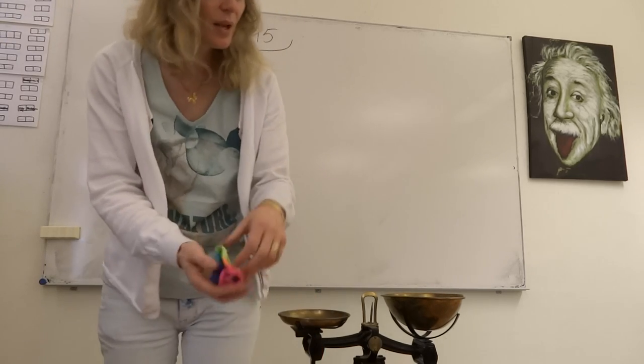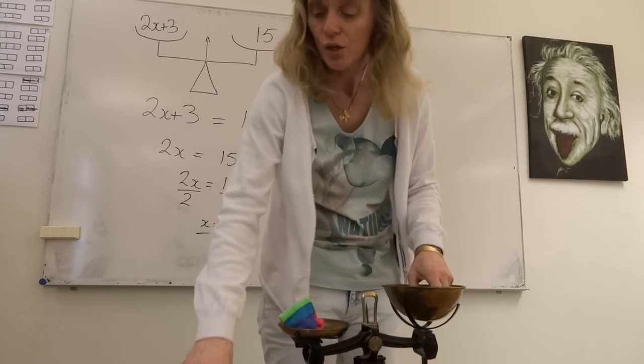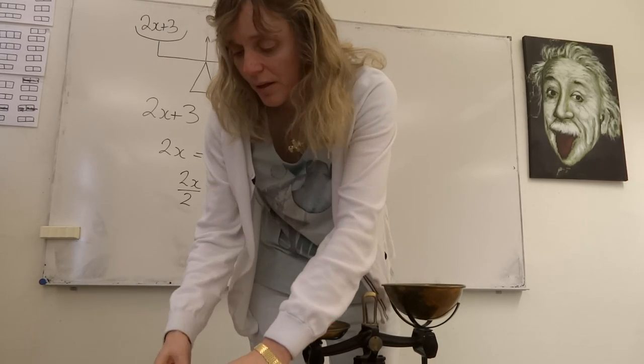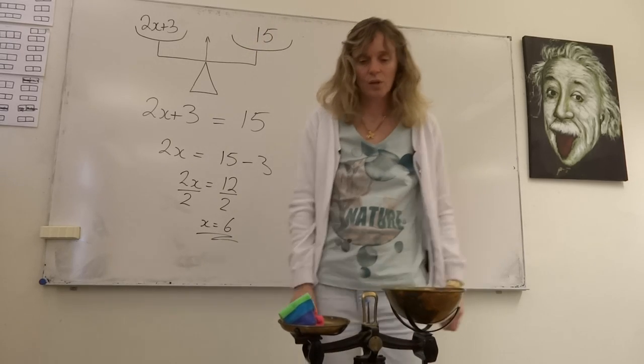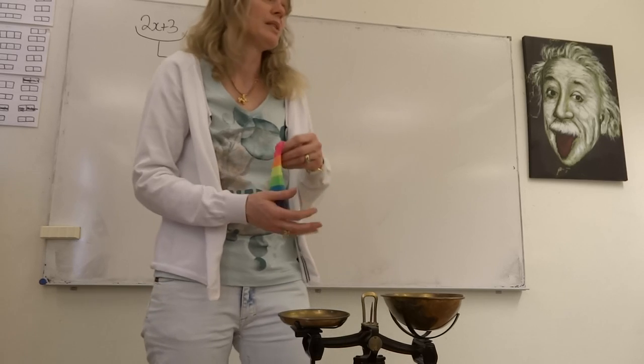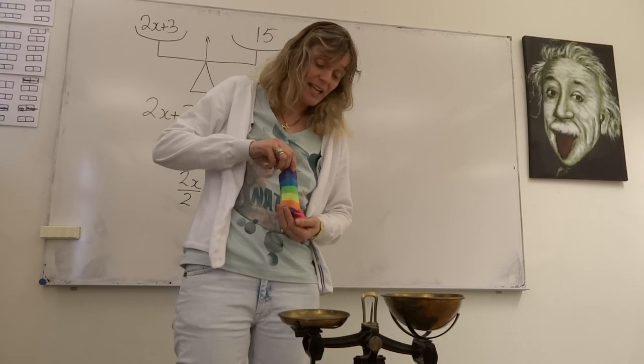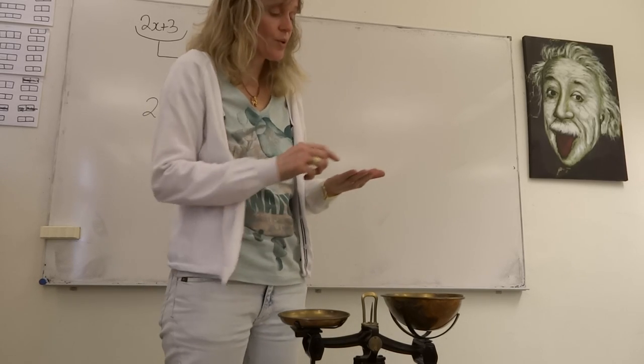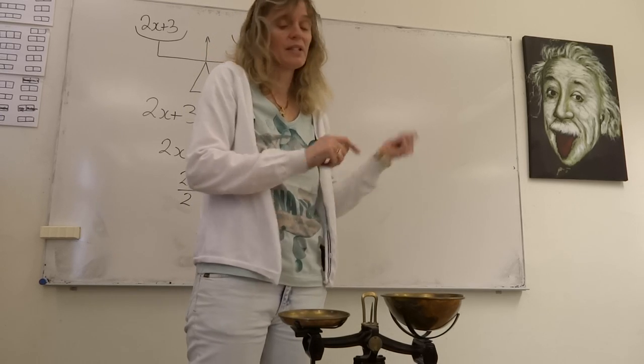So if we've done this right, our bag should balance with six coins, which of course it does. So inside our bag, we shouldn't be surprised at all to find out that we have six coins: one, two, three, four, five, six. Here we have six coins balancing with six coins.